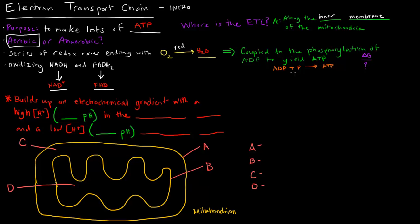Now, if you recall, phosphorylating ADP to make energy — is that delta G going to be positive or negative? This is going to be a positive delta G because we're making the energy, so energy is going to be required. If taking ADP and phosphorylating it to ATP is an endergonic process and it's coupled to this series of redox reactions, we would expect this series of redox reactions to be exergonic, because they need to be releasing energy that we can use to power the production of ATP.